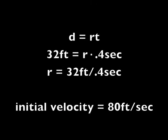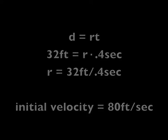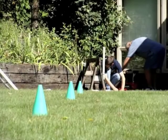We use the equation D equals RT, substitute our information in, and see that it's coming out to be about 80 feet per second. That's how fast the potato is moving.